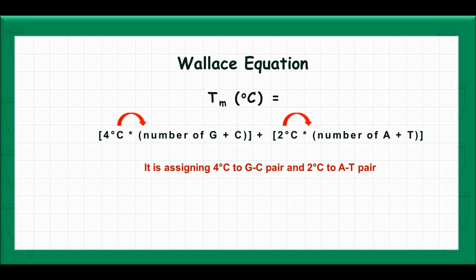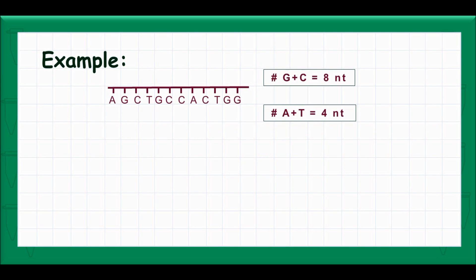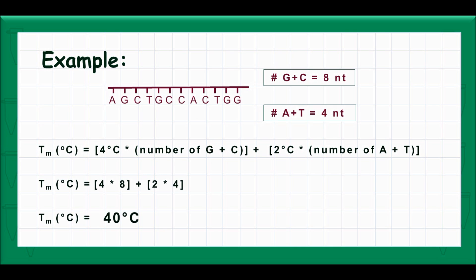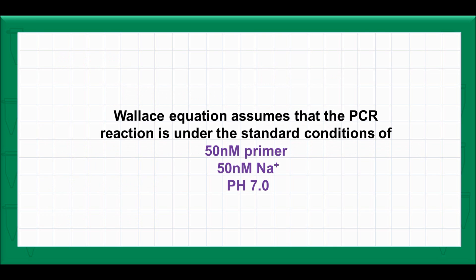Let's have an example. Look at the following primer. The number of guanine and cytosine equals 8 nucleotides and the number of thymine and adenine equals 4 nucleotides. Substitute both values and do simple calculations to solve the equation. Note that the Wallace equation assumes PCR reaction is under standard conditions of 50 nanomolar primer, 50 nanomolar sodium concentration, and pH equals 7.